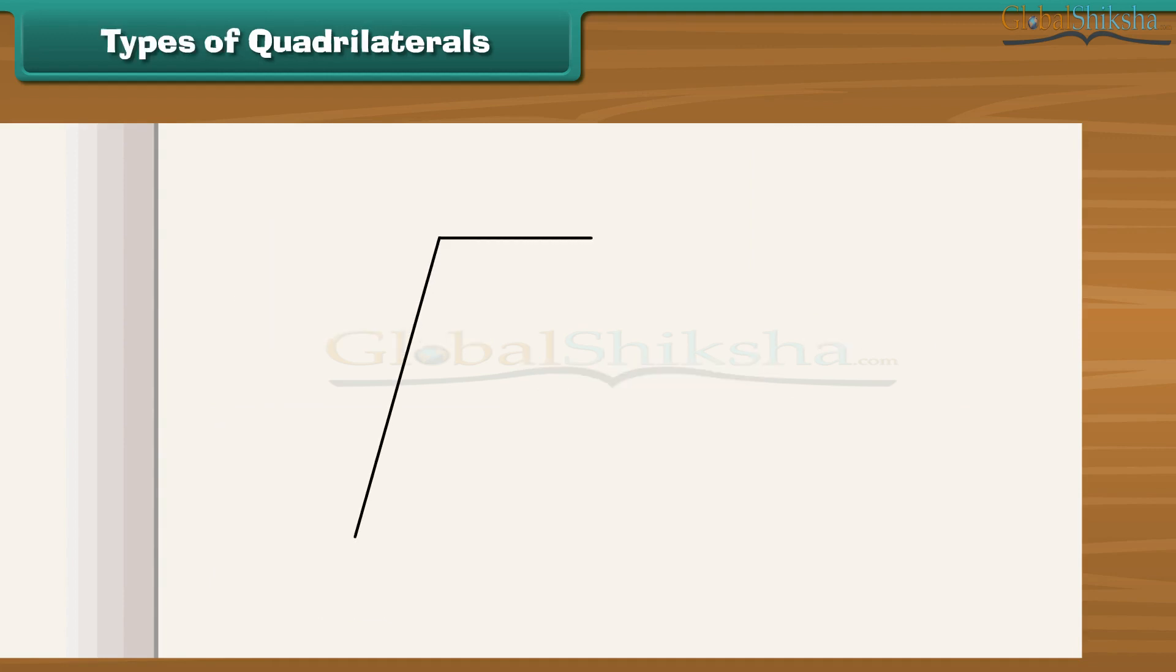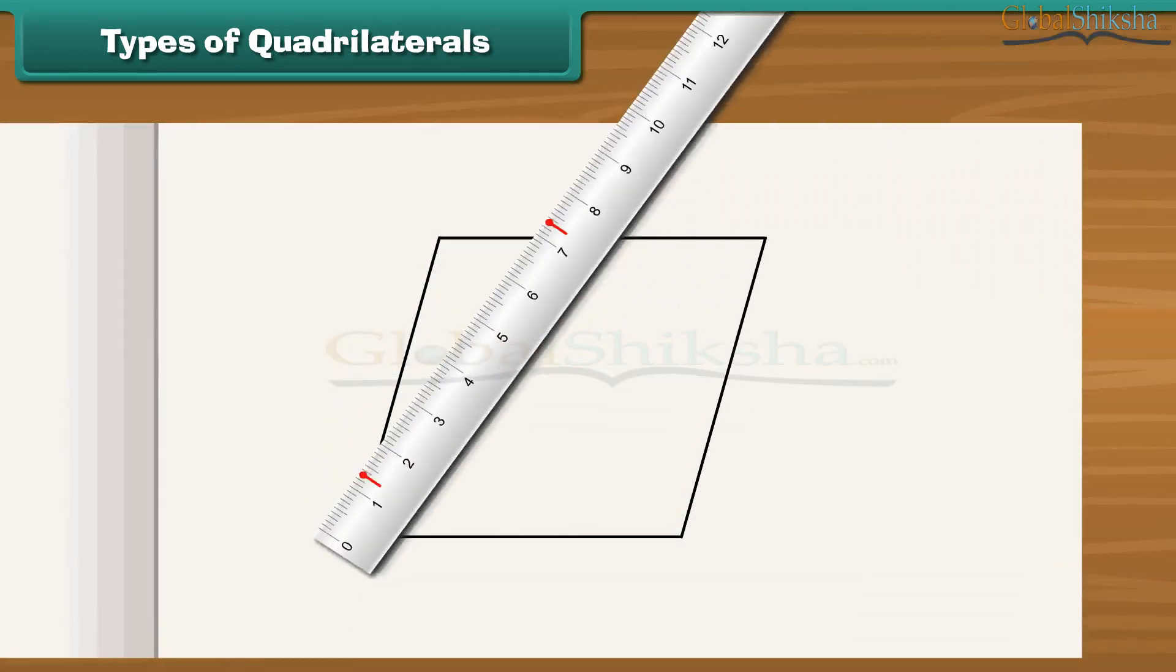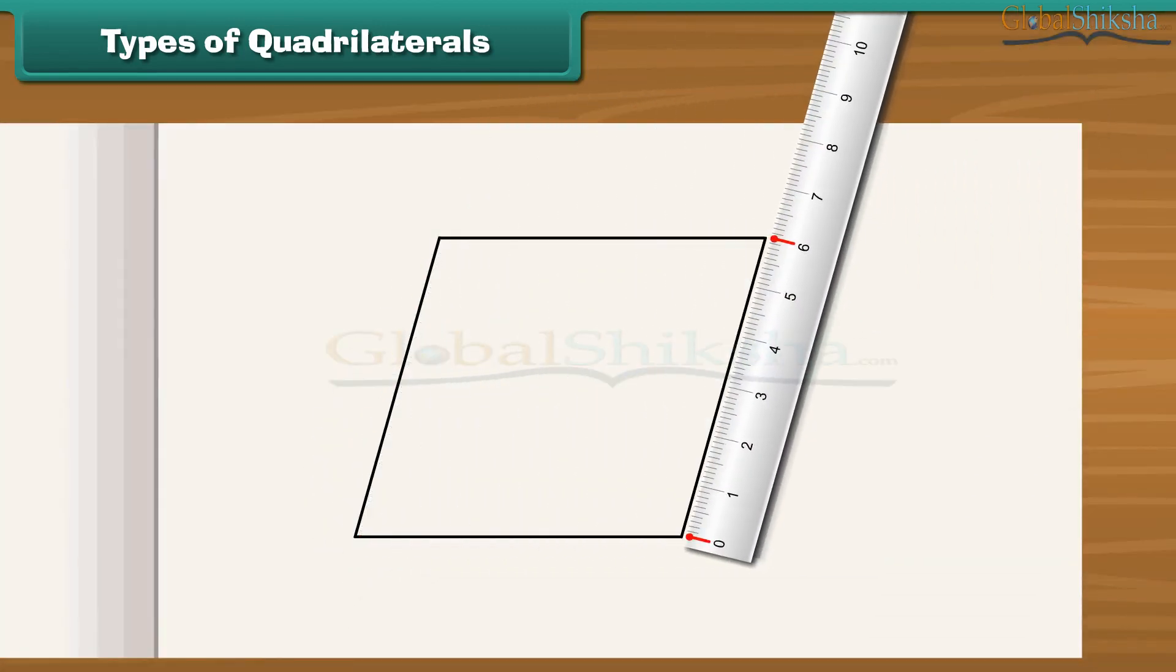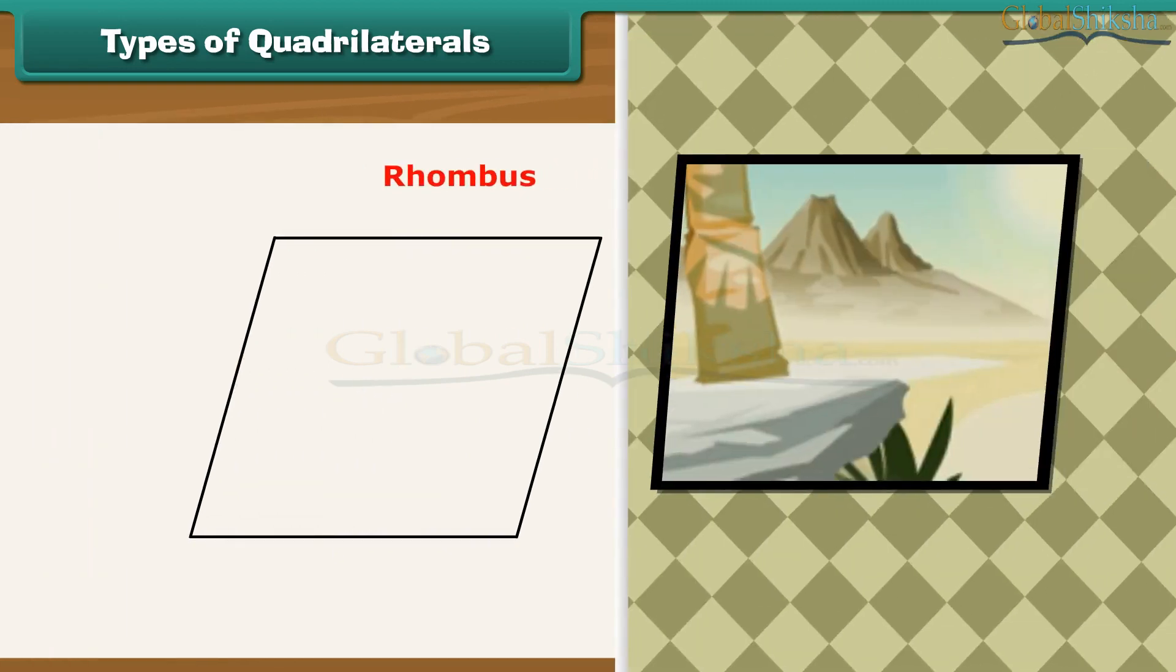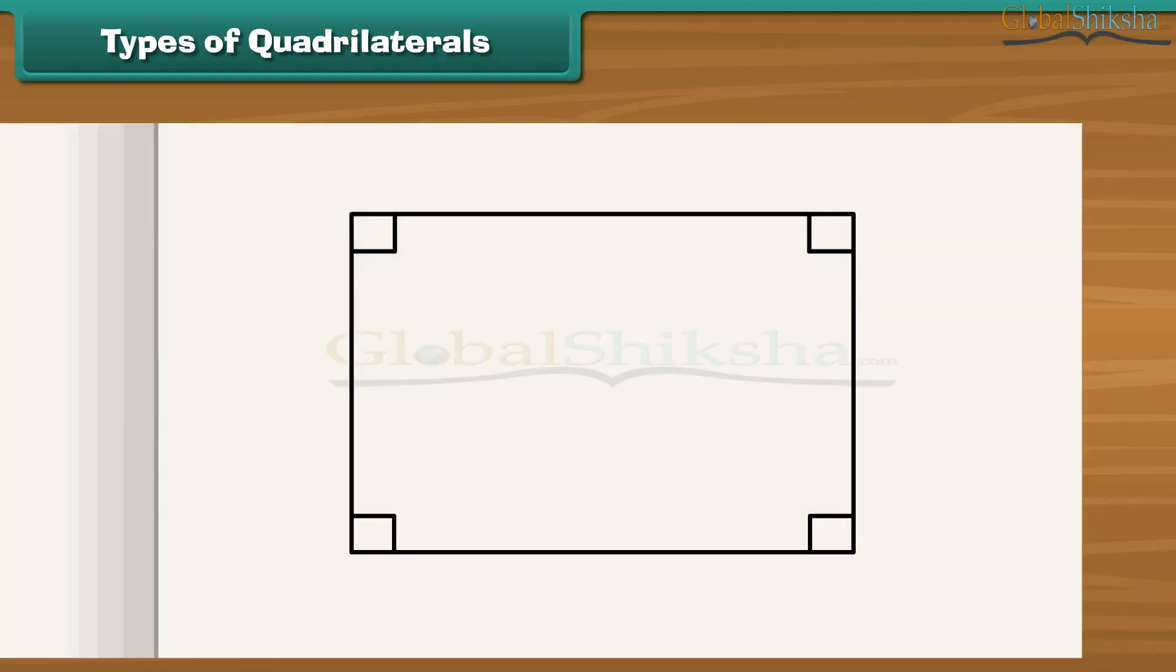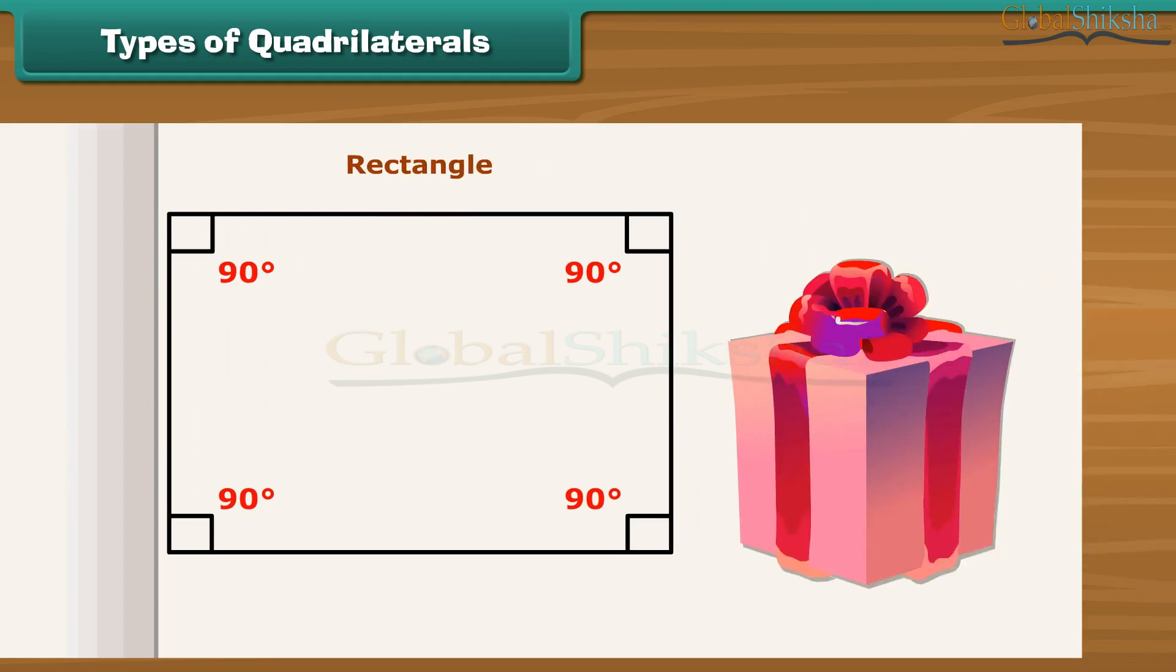A parallelogram in which all four sides have the same length is called a rhombus. Look at this painting. This is a rhombus. A parallelogram in which all angles are right angles, that is 90 degrees, is called a rectangle. For example, this gift pack is a rectangle.